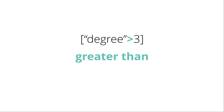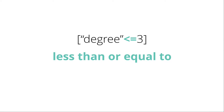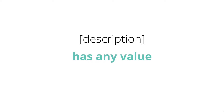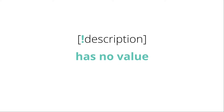You can do different operators, things like greater than — so degree greater than 3 — less than, less than or equal to. And you can even do what we call presence or absence. So this would look for any element, connection, or loop that has a value for the description, while this would look for any element, connection, or loop which doesn't have a value for description.